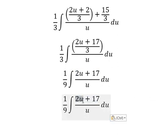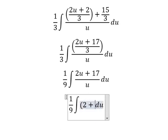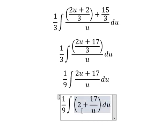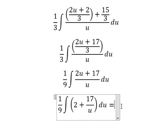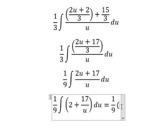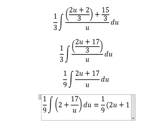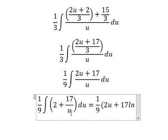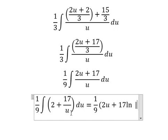We can split this: 2u divided by u gives us 2, and 17 over u remains. So one-ninth integral of 2 plus 17 over u du equals one-ninth times 2u plus 17 ln of the absolute value of u plus C.